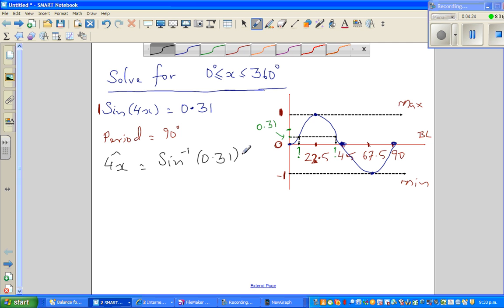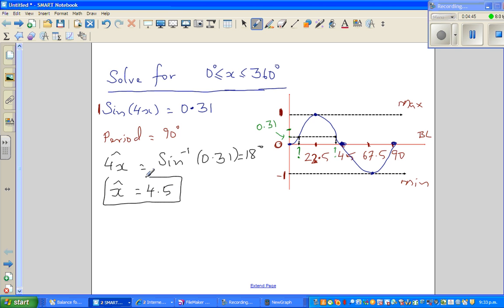So it is 18 degrees, rounding it. So this is 4x = 18 degrees. So if you divide both sides by 4, so your x is 18 divided by 4 is 9. Half of 18 is 9, so this is 4.5.